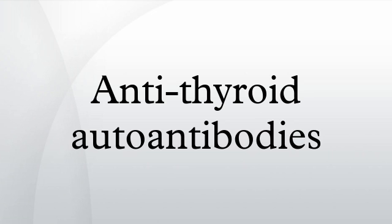TRAbs are present in 70–100% of Graves' disease and 1–2% of normal individuals. Activating TRAbs are characteristic of Graves' disease. TPO antibody is measured more easily than the TSH receptor antibody, and so is often used as a surrogate in the diagnosis of Graves' disease. These antibodies activate adenylate cyclase by binding to the TSH receptor, causing the production of thyroid hormones and subsequent growth and vascularization of the thyroid. TRAbs are also useful in the diagnosis of Graves' ophthalmopathy.